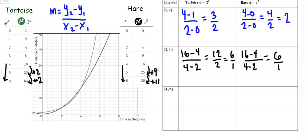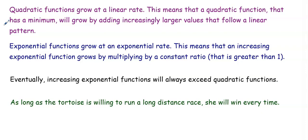To summarize: quadratic functions grow at a linear rate, meaning a quadratic function with a minimum will grow by adding increasingly larger values that follow a linear pattern. Exponential functions grow at an exponential rate — an increasing exponential function grows by multiplying by a constant ratio greater than 1. Eventually, increasing exponential functions will always exceed quadratic functions. So as long as the tortoise is willing to run a long distance race, she will win every time. That's it for this video — thank you for watching.